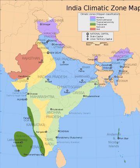India is home to an extraordinary variety of climatic regions, ranging from tropical in the south to temperate and alpine in the Himalayan north, where elevated regions receive sustained winter snowfall. The nation's climate is strongly influenced by the Himalayas and the Thar Desert. The Himalayas, along with the Hindu Kush Mountains in Pakistan, prevent cold Central Asian katabatic winds from blowing in, keeping the bulk of the Indian subcontinent warmer than most locations at similar latitudes.